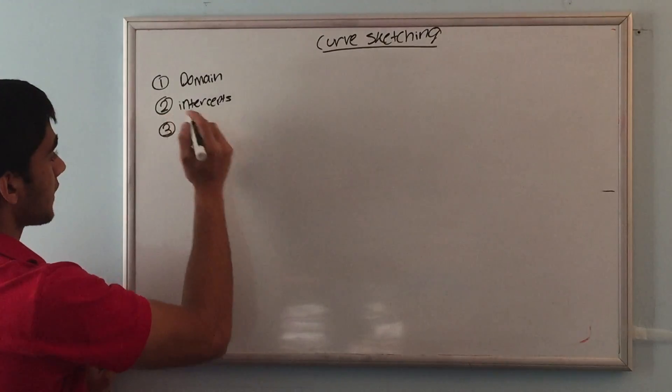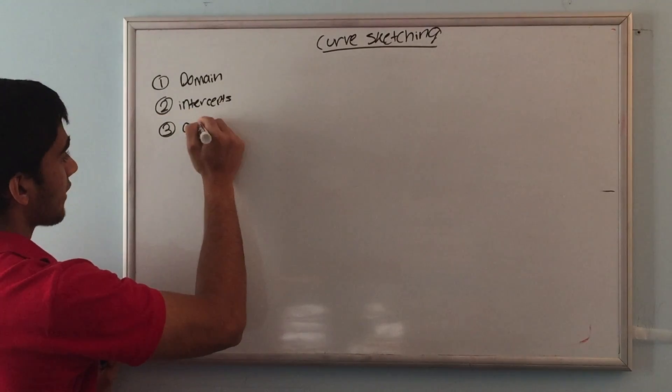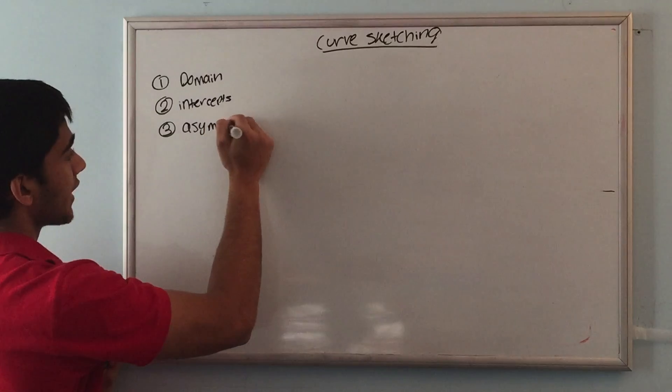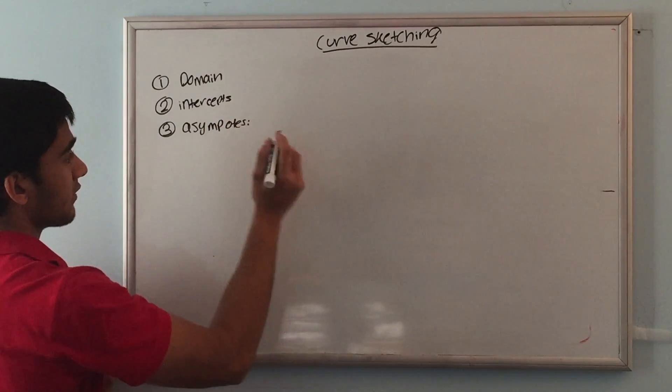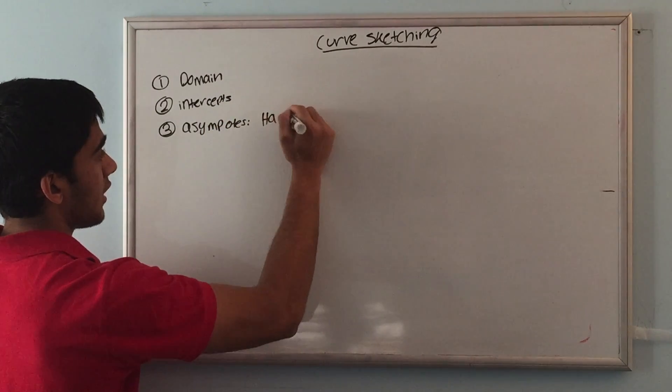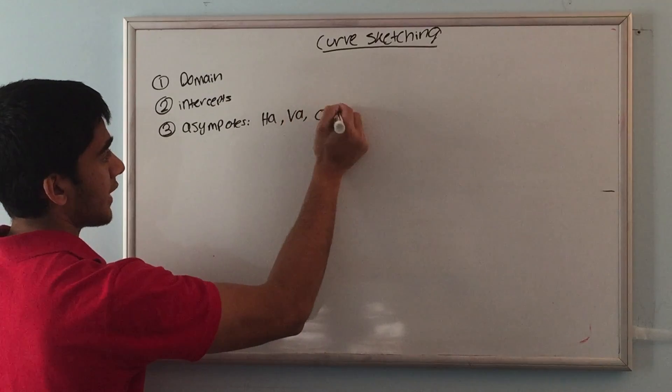The third thing I do is to find the asymptotes - all of the asymptotes of the function. That is any horizontal asymptotes, any vertical asymptotes, or any oblique asymptotes of the function.